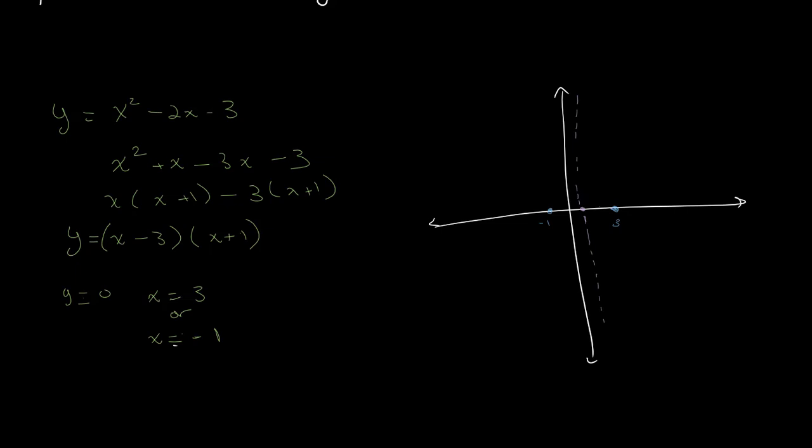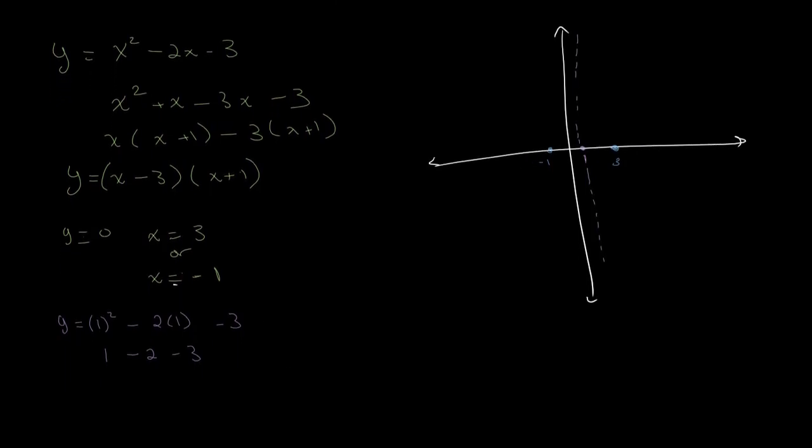And if we plug the value of 1 into our equation, so y is equal to 1 whole squared minus 2 times 1 minus 3. We get 1 minus 2 minus 3, which gives us a value of negative 4. Therefore, our minimum point is 1, negative 4.